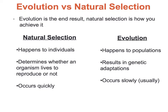Evolution versus natural selection — they are not the same thing. Evolution is the end result of natural selection and how nature chooses traits. You need to be able to compare and contrast them. Evolution happens to a population; populations change over time, usually over thousands of years, resulting in genetic adaptations, and it occurs very slowly. Natural selection happens to individuals — nature chooses the traits an individual has, those individuals survive and reproduce. This happens quickly because it's at an individual level. Natural selection is the driving force behind evolution.